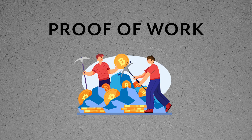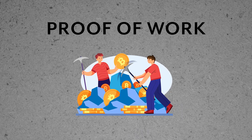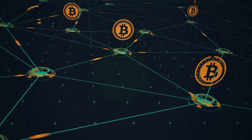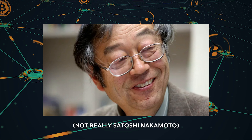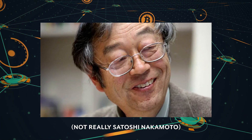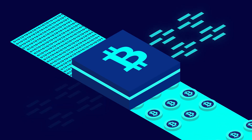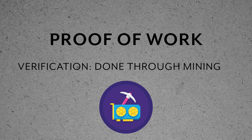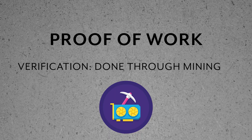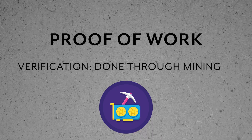Proof of work is one of the oldest, if not the first, consensus algorithm, first introduced in the 1990s as a way to mitigate email spam. However, Bitcoin's creator Satoshi Nakamoto was the first to apply the technology for use in a digital monetary system — hence how Bitcoin was created and secured. In the proof of work algorithm, verifying cryptocurrency transactions is done through mining.